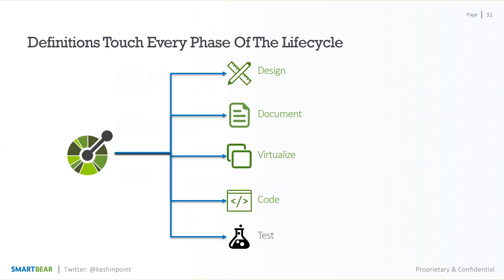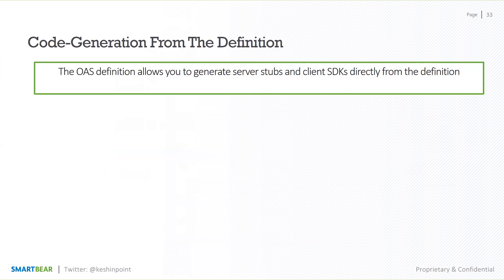Now let's talk about how definitions touch the development phase of your API life cycle. Code generation is something that's become incredibly popular, especially with tools like the Swagger CodeGen, which is one of the most popular tools in the Swagger ecosystem. From an OpenAPI definition of your API, you can actually generate server stubs and client SDKs directly.